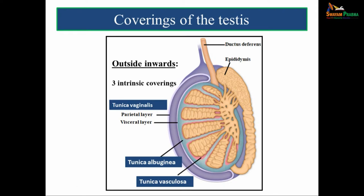So far we covered the external features of testis — two poles (upper and lower), two borders (anterior and posterior), and two surfaces (medial and lateral). Now we move on to the coverings of the testis.